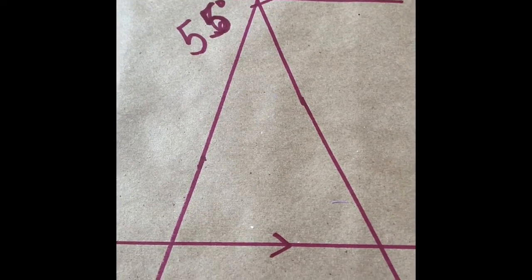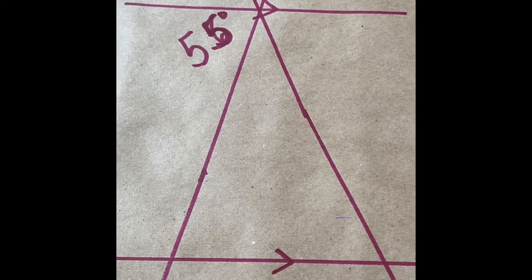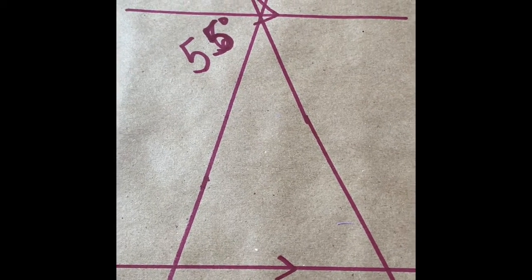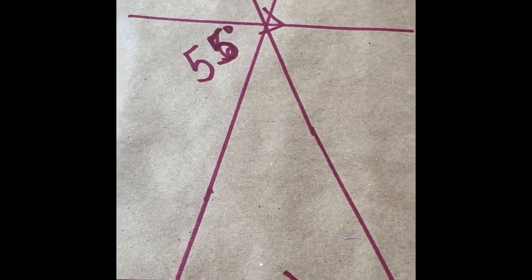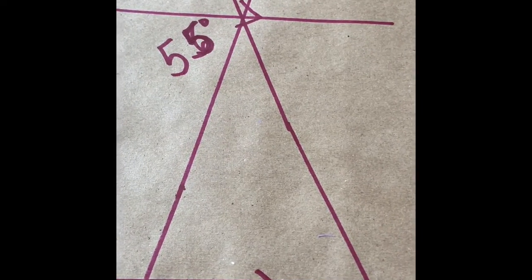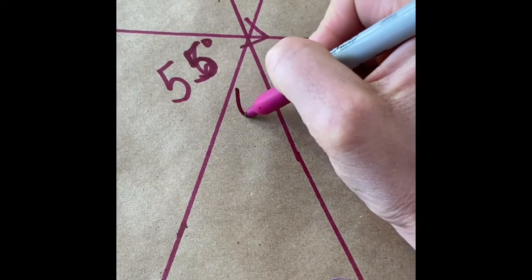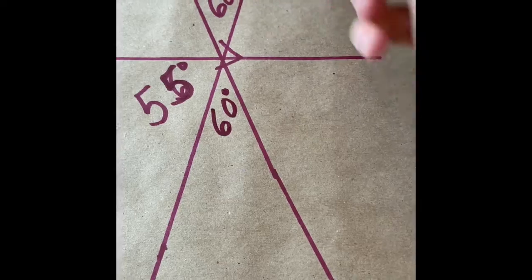So the first thing I want you to notice is that what you should always look for first is opposite angles. Opposite angles means that there is a letter X and if there's a letter X the two angles will be equal to each other. So what I have here is I have 60 degrees here and this will also be 60 degrees because they are opposite.